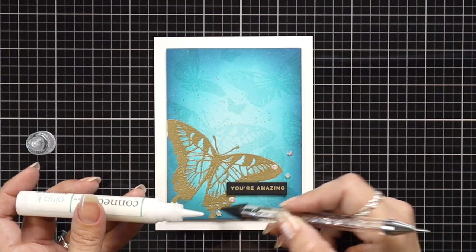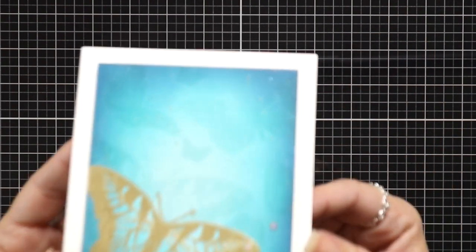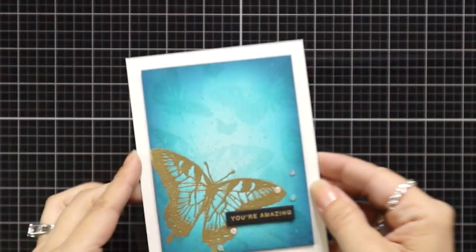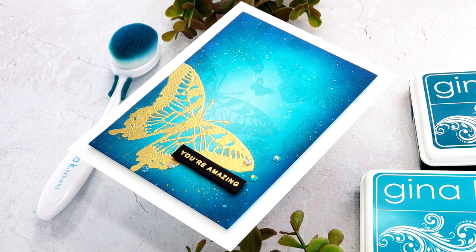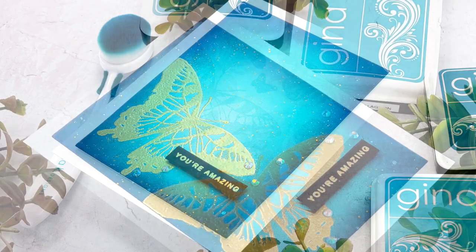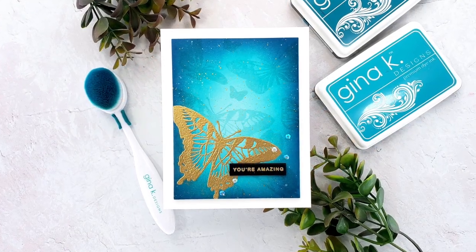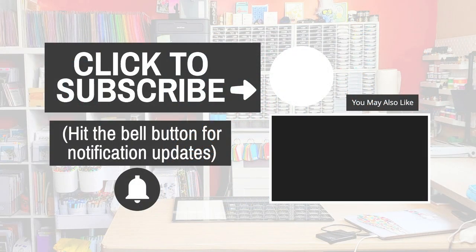So after I attached everything to a card base, I'm finishing it off with some of the Angel Aura sequence mix or the jewels mix from Gina K designs. And that is going to finish up my card for you today. I hope you enjoyed this technique. It is definitely one of my all-time favorites that you'll probably see me do a lot if you follow me. I will have all of the supplies listed down below in the video description and over on my blog as well. Thank you so much for joining me today and I'll see you again soon.